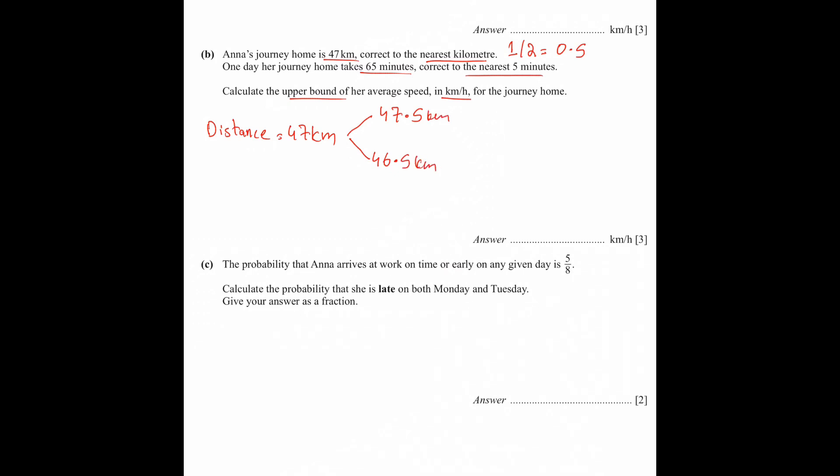Then 65 minutes is the time, and this is rounded correct to the nearest 5 minutes. 5 minutes means that when I divide this by 2, I get 2.5, which I will add for upper bound and subtract for lower bound. So 65 plus 2.5 is 67.5, and 65 minus 2.5 is 62.5. Now please bear in mind that this is in minutes and the speed we need is in km per hour.